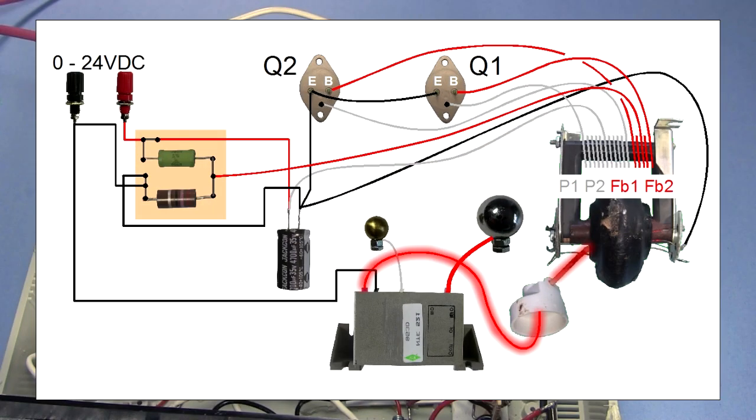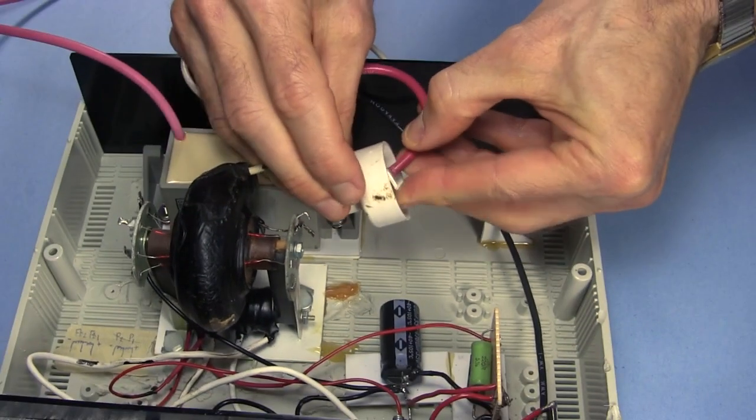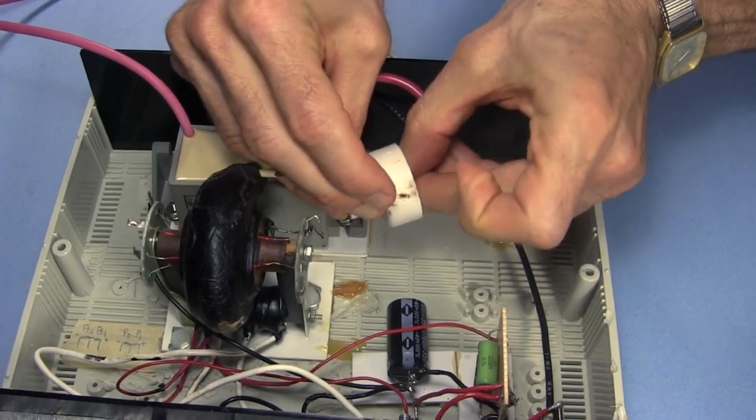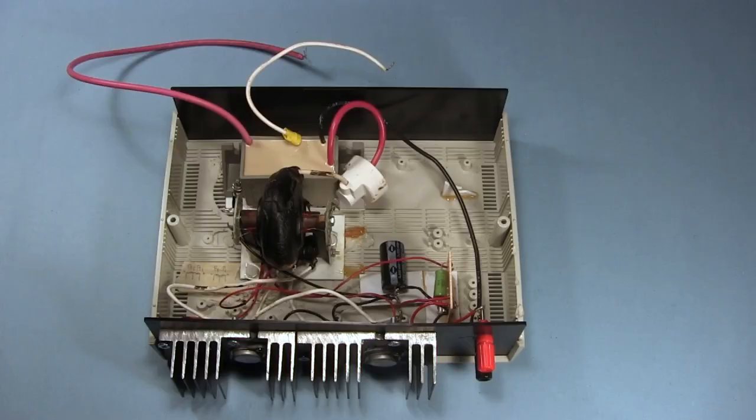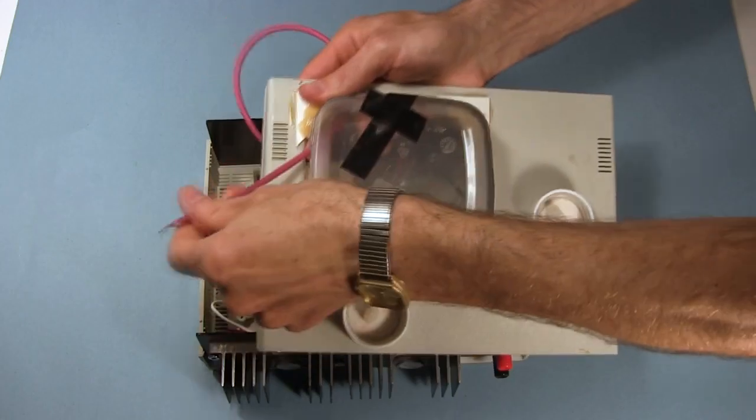For connecting the high voltage output of the flyback to the input of the multiplier, or tripler, I've already fashioned this copper cup to the multiplier's input wire. That fits snugly into the flyback's cap. Before I put the case's cover on, notice that I laid it out so that the low voltage side is all here, and the high voltage side is separated back here.